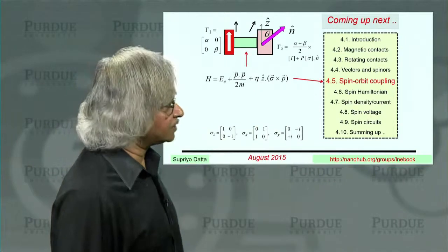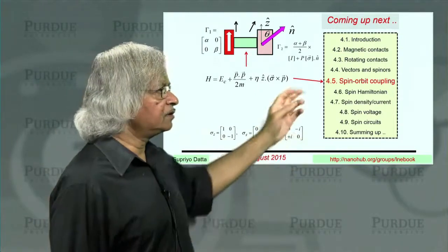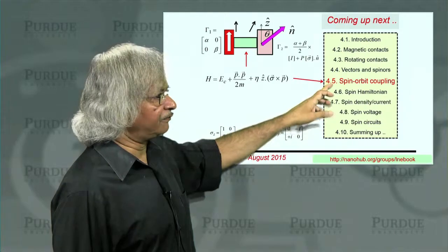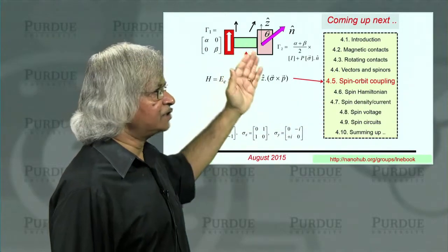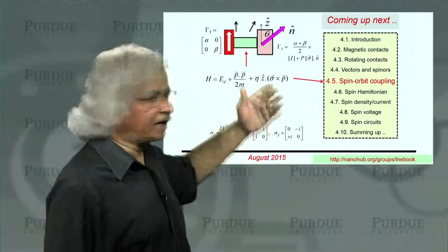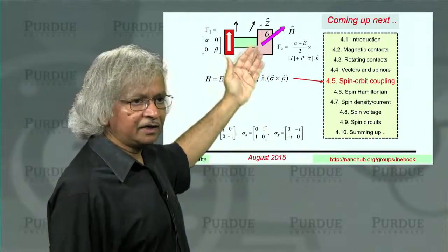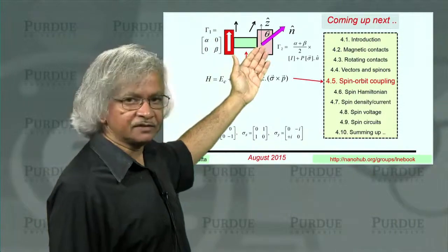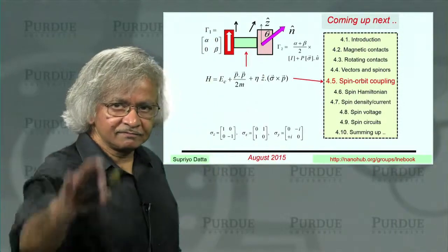So that's a quick introduction then to this notion of vectors and spinors and the differences and the relationship. And what we'll now do is, in the next lecture, talk about spin-orbit coupling. This very important effect in channels which causes spins to precess inside a channel and which can be used to control the flow of spins in spintronic devices. Thank you.